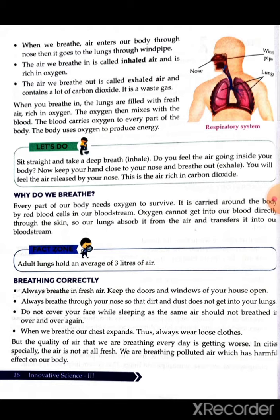Every part of our body needs oxygen to survive. Oxygen is carried around the body by red blood cells in our bloodstream. Oxygen cannot get into our blood directly through the skin, so our lungs absorb it from the air and transfer it into our bloodstream. In this way, oxygen mixes with the blood inside our body. The organs involved in the respiratory system are the nose, windpipe, and lungs.